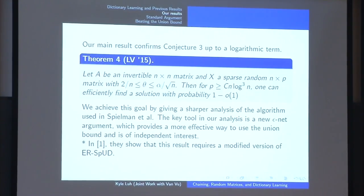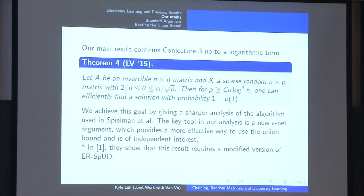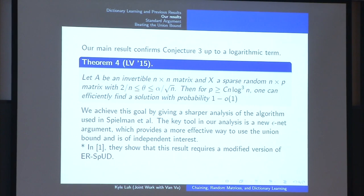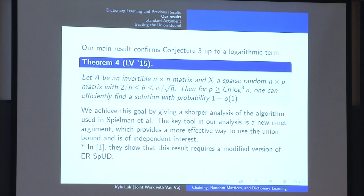One of our main results with Van Vu is to show that n log³ n samples are sufficient for their algorithm to output a solution with high probability. It always hurts to put an asterisk next to your main result, but it was shown by Jelani and his student Basilak that our argument overlooked part of the algorithm. They redressed the issue by modifying ErrorSPUD, so for the rest of the talk this theorem applies to their modified version of the algorithm. The main tool is tightening the analysis via a chaining-type argument, improving a concentration bound used by Spielman, Wang, and Wright.